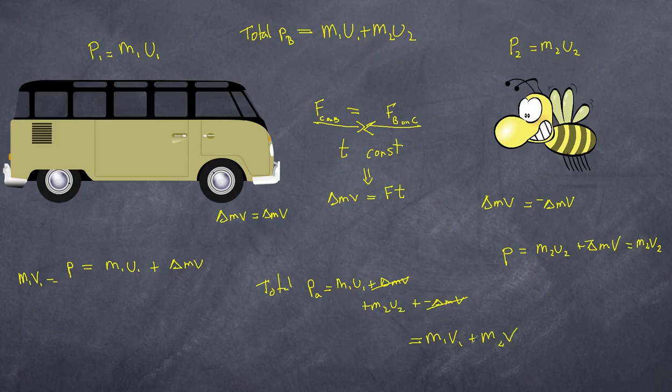So really my total momentum before is my total momentum after. That is the law of conservation of momentum. The total momentum before equals total momentum after, or sometimes stated as the total momentum in a system where collision occurs remains constant.